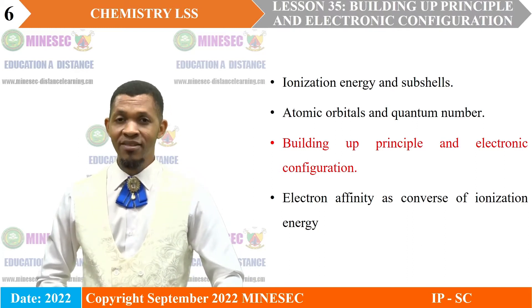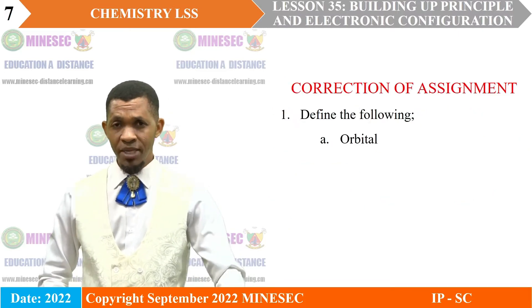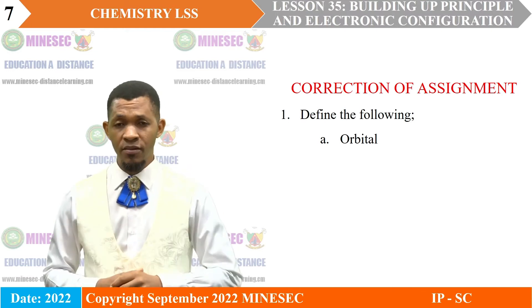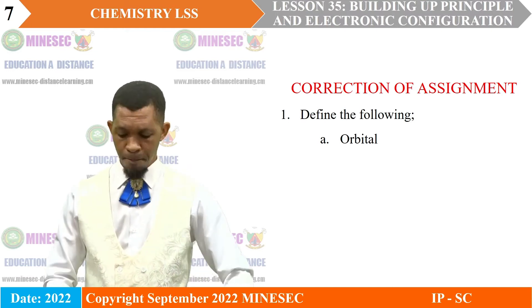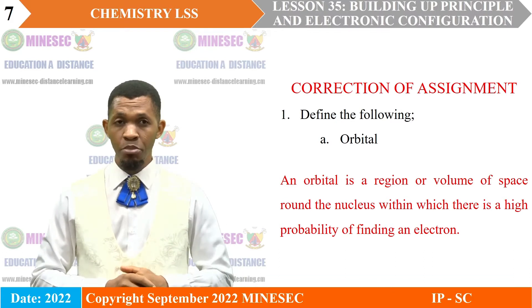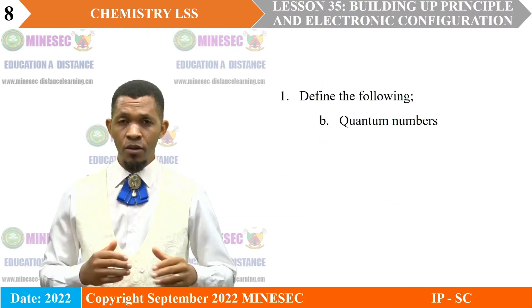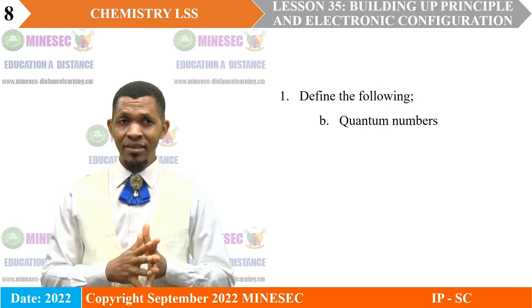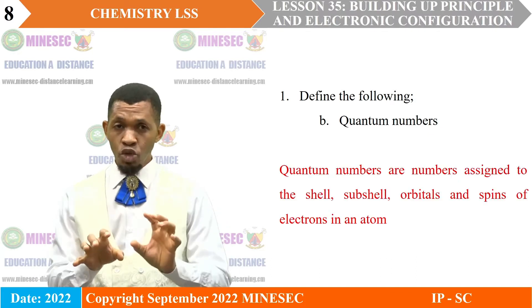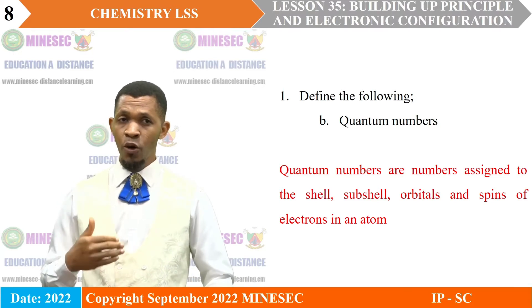Before beginning today's lesson, let us correct the assignment from our previous lesson. Question 1: Define the following. A. An orbital. An orbital is a region or volume of space around the nucleus of an atom, within which there is a high probability of finding an electron. B. Define quantum numbers. Quantum numbers are numbers assigned to the shells, sub-shells, orbitals and spins of electrons in an atom.